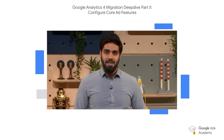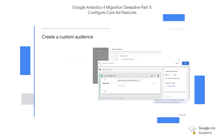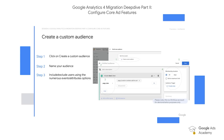First, creating a custom audience. Step one, click on create a custom audience. Then you can name and describe your audience. Step three is to include or exclude users from numerous events and attributes options — for example, you can choose a page view event where users add to cart. You then need to set a duration and trigger for this audience. Final step, click save.